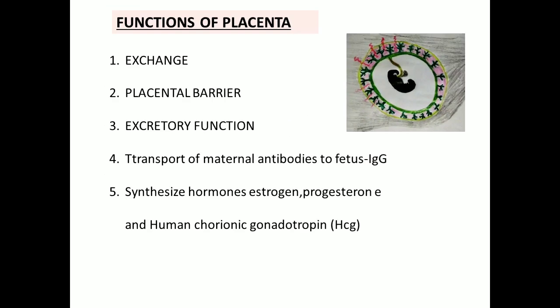The functions of the placenta: number one is exchange function — the placenta transports respiratory gases, electrolytes, nutrition, and water across the placenta from maternal blood to fetal blood. The second function is the placental barrier — the placenta acts as a barrier to prevent the entry of pathogens to the fetus from maternal blood, but certain viruses can cross this placental barrier.